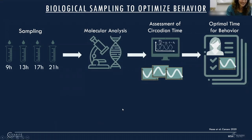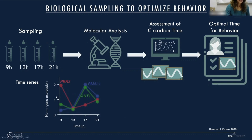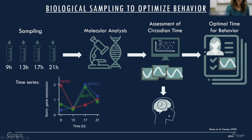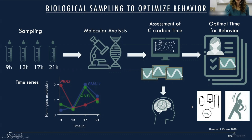Let's have a closer look at this pipeline. Sampling: we take some kind of biological tissue several times a day, giving us a time series of either genes or physiological measures such as hormones or temperature. This time series is then analyzed computationally. This analysis gives us circadian time on one hand, and on the other hand, the combined result is used to predict optimal time for behavior — exemplified here with a cancer drug and with sports and exercise performance.